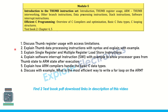Coming to module 5, which is introduction to the Thumb instruction set of ARM. Here: thumb register usage with limitations for those registers; explain thumb data processing instructions with syntax and an example; explain single register and multiple register load instructions; load and store instructions; explain software interrupt instruction (SWI) with an example to show the processor goes from Thumb state to ARM state after execution. Explain how ARM compilers handle the basic C data types, and discuss the most efficient way to write a for loop on ARM. Refer the textbook for examples — better to write all answers for modules 3, 4, and 5 with an example.